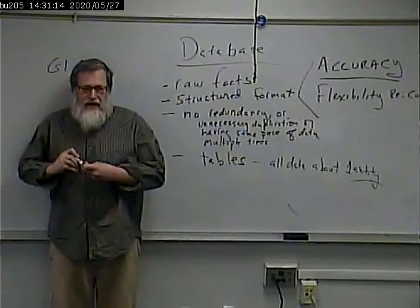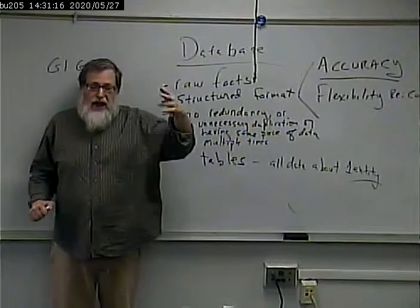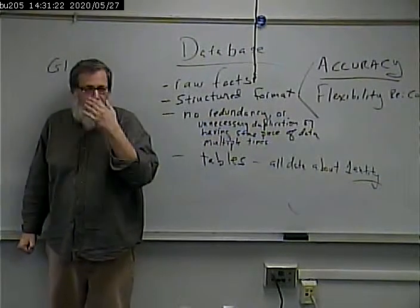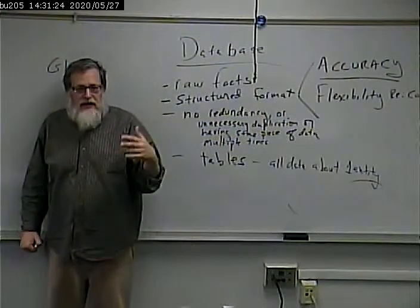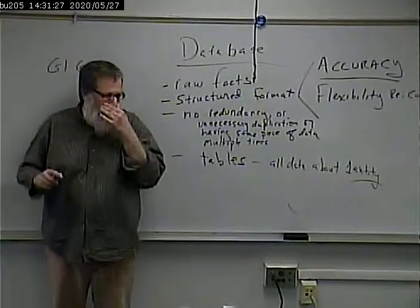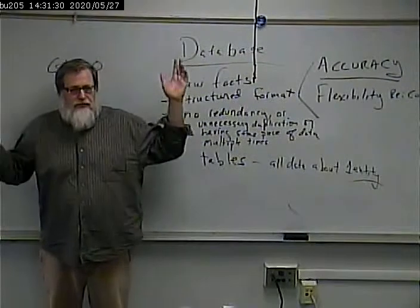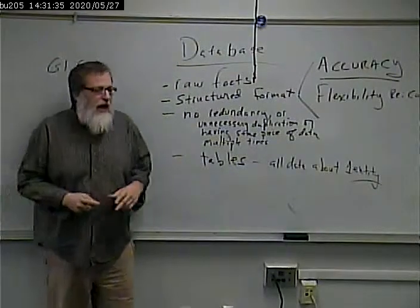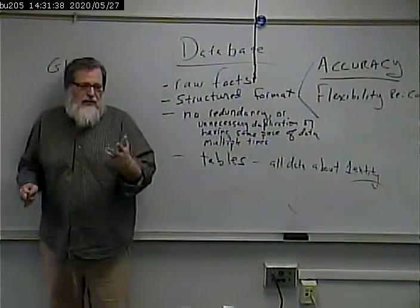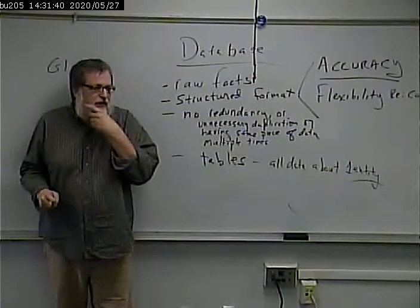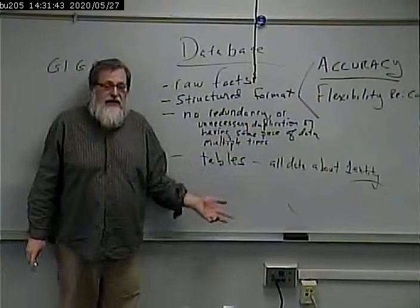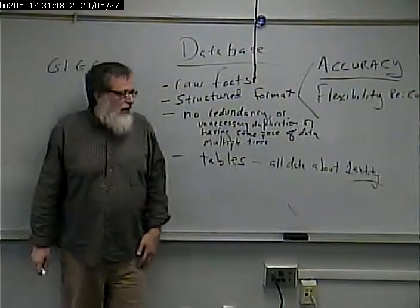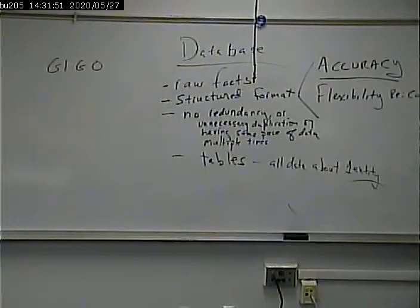What do we mean by an entity? That gets back to our problem domain. You can think of entities as actors — participants — in the problem domain. They can be something tangible or intangible. For example, a student is an entity in an academic environment. A professor is an entity in an academic environment. A credit hour is an entity.